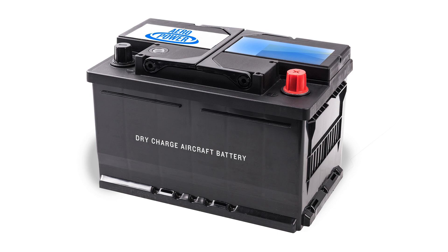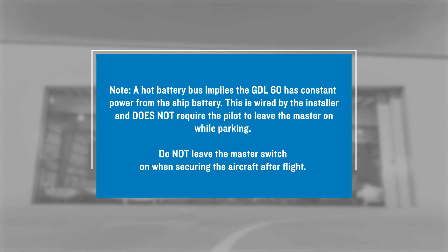The GDL60 requires a hot battery bus for data transfers to and from the aircraft while the aircraft is powered off. The GDL60 provides configurability to ensure that its energy drawn from its connected battery stays within the levels allocated for the GDL60 and its operations. Note: a hot battery bus implies the GDL60 has constant power from the ship battery. This is wired by the installer and does not require the pilot to leave the master on while parking. Do not leave the master switch on when securing the aircraft after flight.